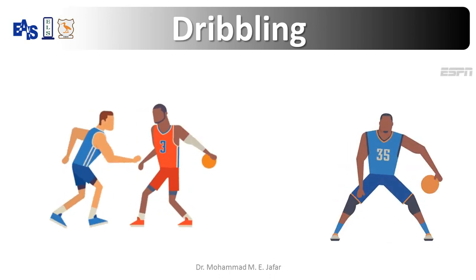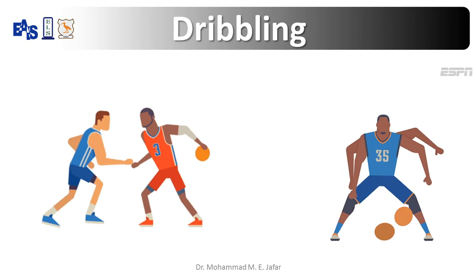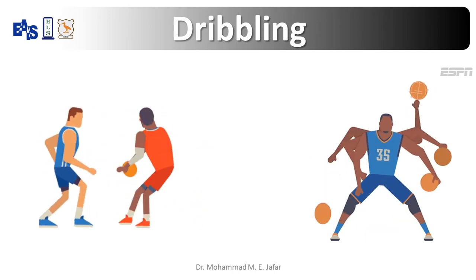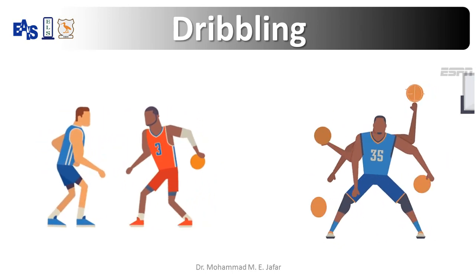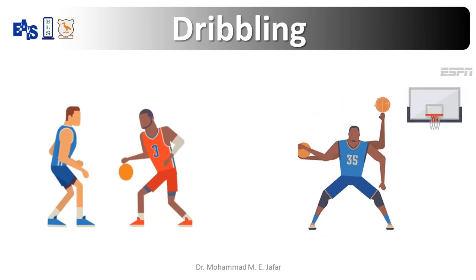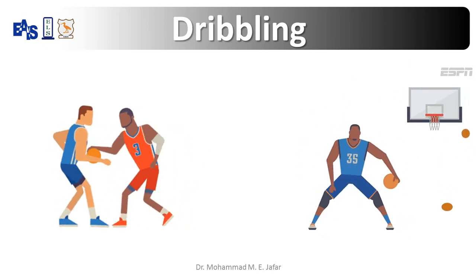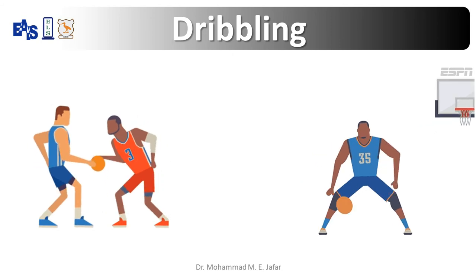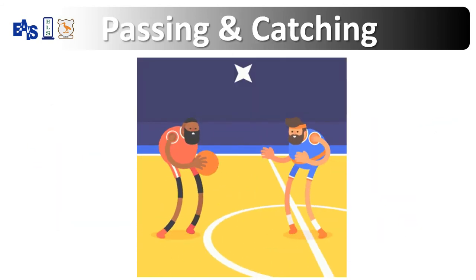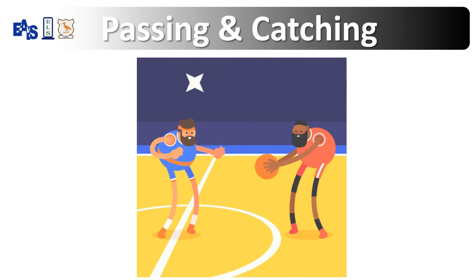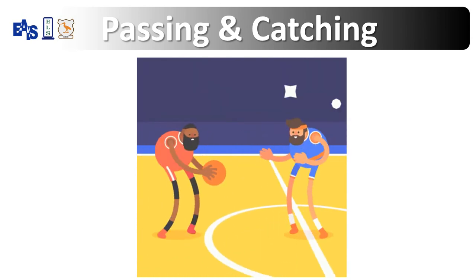Dribbling means advancing the ball up the court by bouncing it with one hand. Passing and catching means moving the ball around the court by throwing it to teammates.